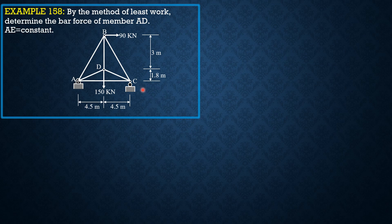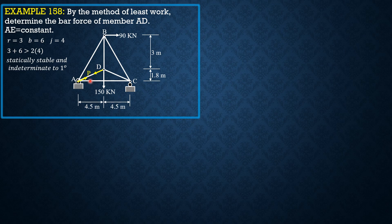In the first method we found out that this is indeterminate to the first degree, statically stable and indeterminate to the first degree. R is 3, bar 6, joins 4. So 3 plus 6 is greater than 2 times 4, so that's why this is statically stable and indeterminate to the first degree.